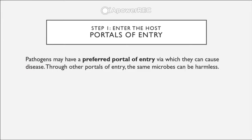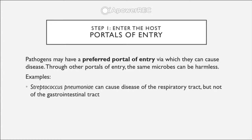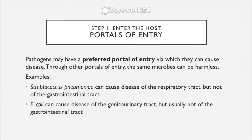Something important to keep in mind is that each pathogen has its own preferred portal of entry through which it can cause disease, and through other portals of entry the same microbes can actually be harmless. Examples of this are Streptococcus pneumoniae, which can cause disease of the respiratory tract but not of the gastrointestinal tract, and E. coli, which can cause disease of the genitourinary tract but usually not of the gastrointestinal tract.